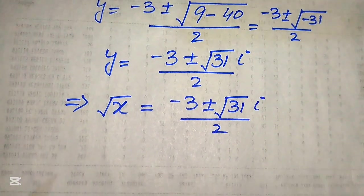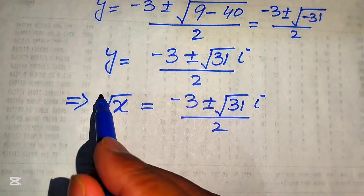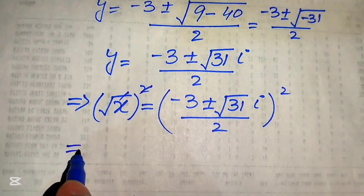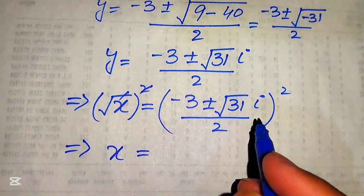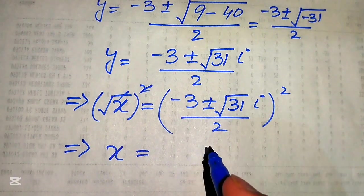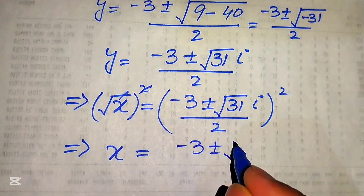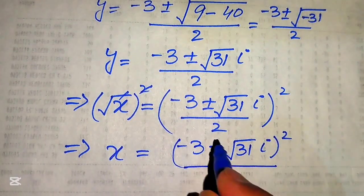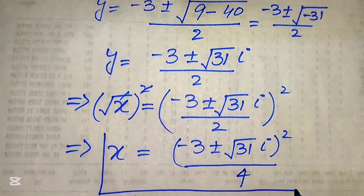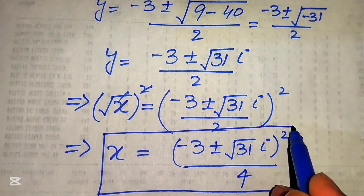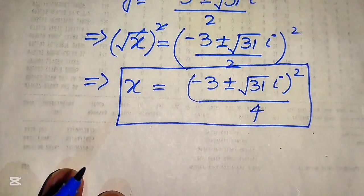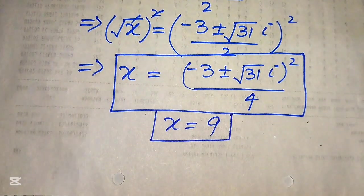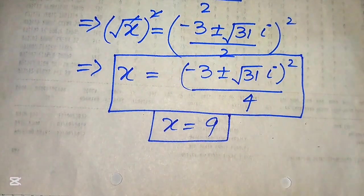Squaring both sides to solve for x, we get x = (−3 ± i√31)² / 4. These are the two complex roots of the equation. The one real root is x = 9. This is the final answer. Thank you for watching — please subscribe for more videos.